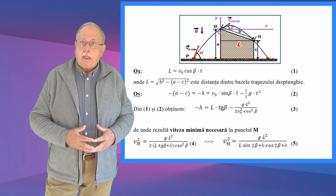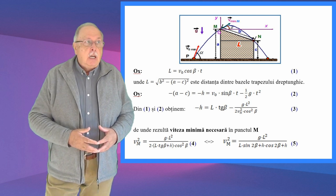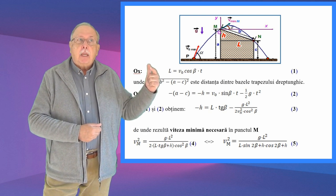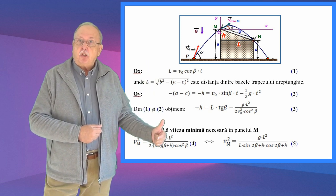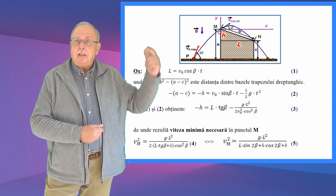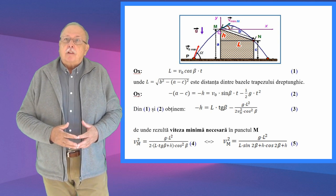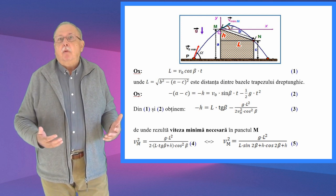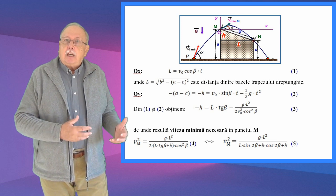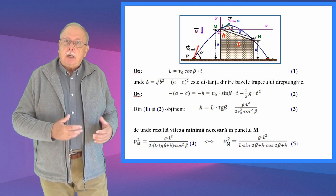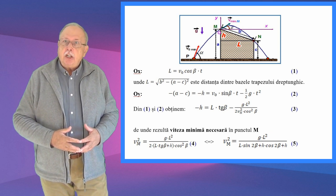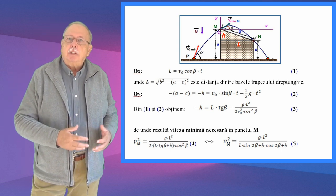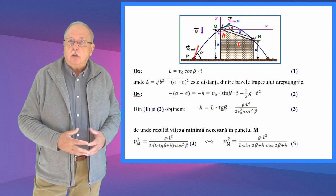Pentru mișcarea pe verticală, adică de-a lungul axei OY, avem minus (A minus C) egal cu minus H. Semnele minus apar pentru că aceste lungimi sunt măsurate în jos, iar sensul pozitiv pe axă este în sus. Deci minus H este egal cu V0 sinus de beta ori T, minus 1/2·G·T pătrat, pentru că pe verticală avem o mișcare uniform variată. Din relațiile 1 și 2, prin eliminarea timpului, obținem minus H egal cu L ori tangentă de beta minus G·L² supra (2·V0²·cosinus² de beta), relație notată cu 3.